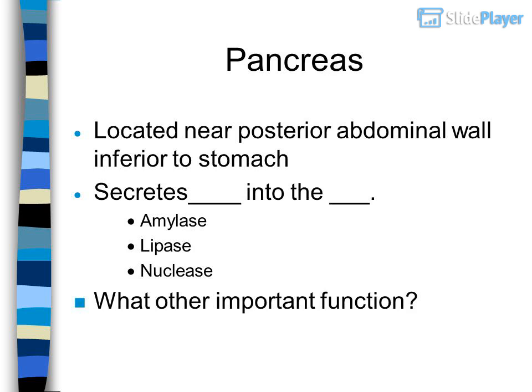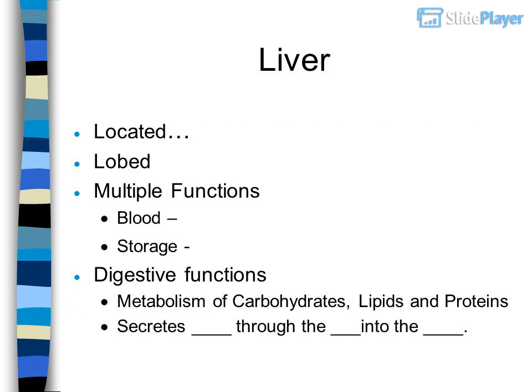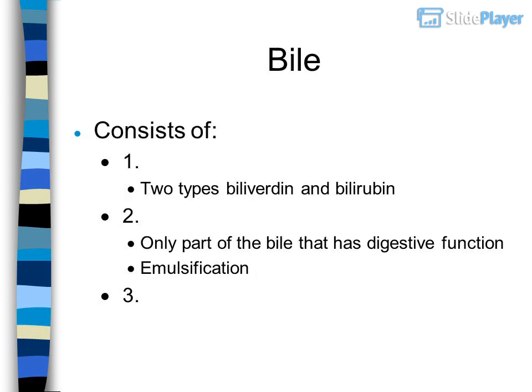Pancreas is located near the posterior abdominal wall, inferior to the stomach. It secretes into the duct: amylase, lipase, and nuclease. What other important function? Liver: located — lobed — multiple functions. Digestive functions include blood metabolism and storage.